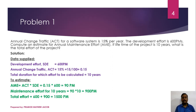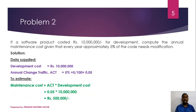The total effort is the maintenance effort plus the effort done during the development phase, which is equal to 600 plus 900, giving a total of 1500 person months. Let's see another problem: if a software product cost rupees one crore for development, compute the annual maintenance cost given that every year approximately 5% of the code needs modification.